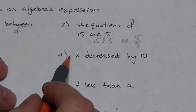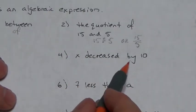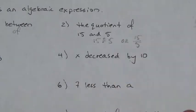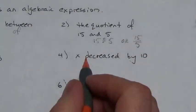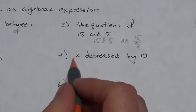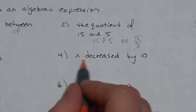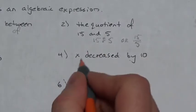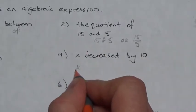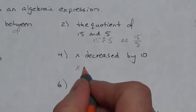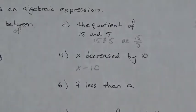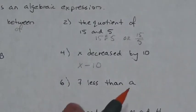Next: x decreased by 10. 'Decreased' means subtraction, but x is being decreased by this value, so we start with x and we are losing 10. So it's x subtract 10.